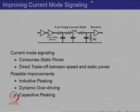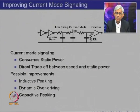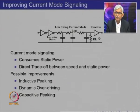Let us look at the basic current mode signaling technique. We need special drivers called low swing drivers, which ensure the voltage at the line does not go rail to rail but swings around a small common mode voltage. This small swing is conveyed and terminated into a load resistance. Notice that the common mode voltage means a steady current flows through this, and therefore there is static power consumption. This small fluctuation is amplified by a receiver to a level where the output again swings from rail to rail.